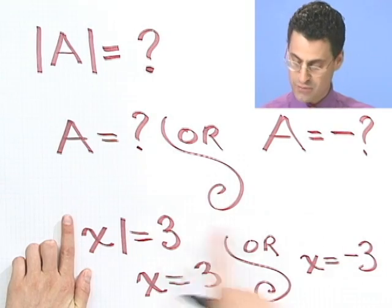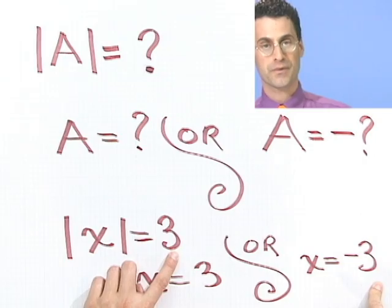One where the thing is just with the number, the inside there with the number, and the other one where we have the inside there with negative the number there. Okay? So two answers.